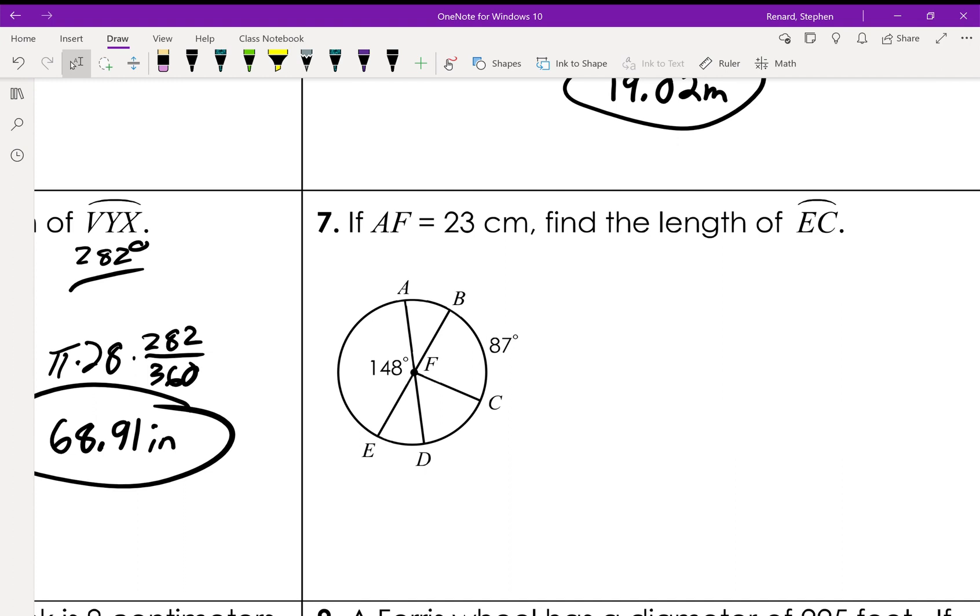AF is 23 centimeters. So that is a radius. We're going to use circumference equals 2πr. We'll find the length of E to C. This bit right here. Okay.